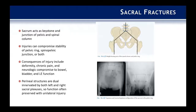Talking about sacral fractures and their treatment — the sacrum essentially acts as a keystone at the junction of the pelvis and the spinal column. Injuries in this area can compromise the stability of the pelvic ring, the spinal pelvic junction, or both. You can see the keystone concept of the sacrum into the pelvis, and weight distribution between the axial skeleton and the hips is largely transmitted through the sacroiliac joints.